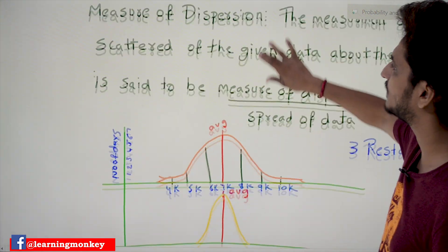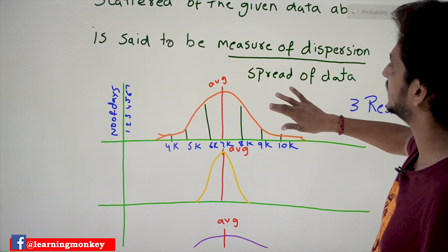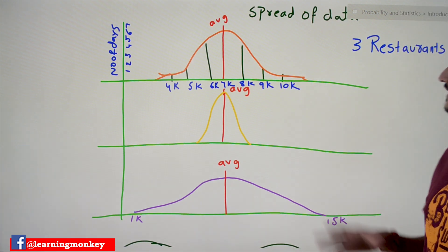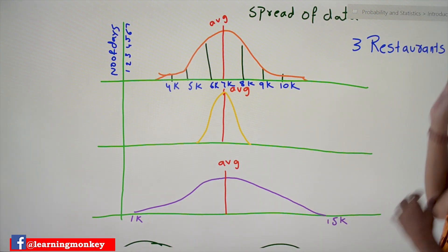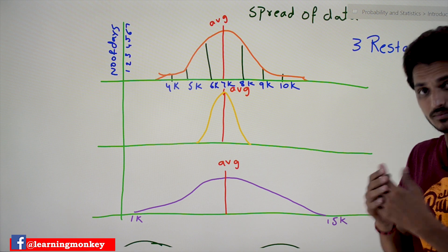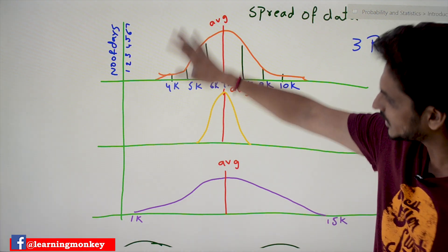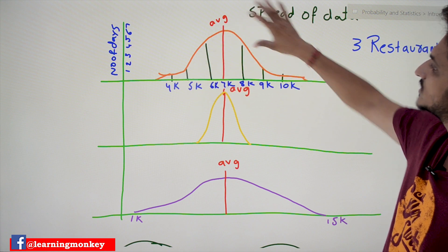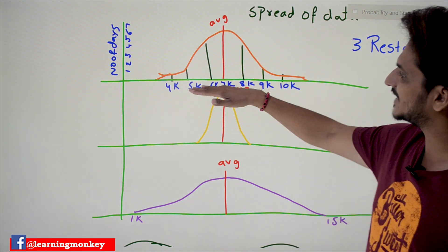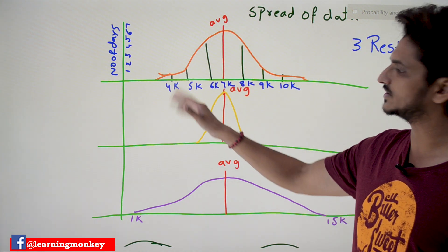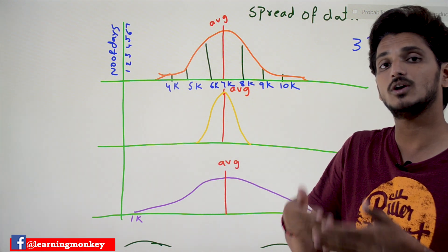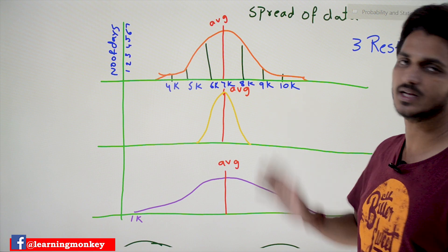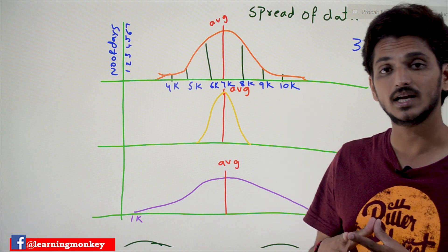Let's understand with an example why it is very important in statistics. We have taken three restaurants and collected data from them. We plotted the distributions — on the x-axis we have thousands collected per day (4k, 5k, 6k, 7k, etc.) and we collected the data for 30 days, meaning one month.